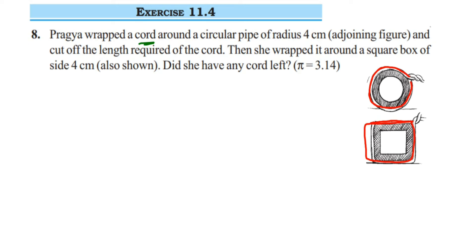Let's first find out the circumference of the circular pipe. Given radius is equal to 4 centimeters. Now we're going to find out the circumference of the circular pipe, so circumference will be equal to 2πr.